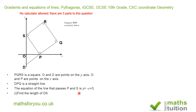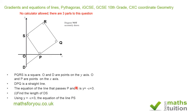For the first part, we need to find the length of DS. To do this, we look at the equation y = -x + 3. Because P lies on the x-axis, the value of y there is 0, so the coordinates of point P will be (3, 0).